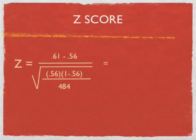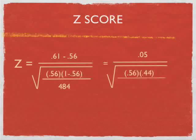That equals... So, we do the numerator first, which is 0.05 divided by 0.56 times 0.44, which is just 1 minus 0.56, divided by 484.